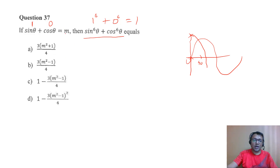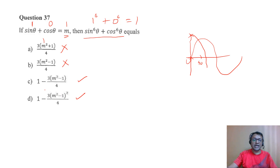Looking at the first option, if I put m = 1, I don't get 1 — I get (1+1)/2 upon 4×3, which is not 1. The second option gives zero because 1−1 = 0. Options C and D both give you 1 when I put 90 degrees, so we can't distinguish between C and D yet.